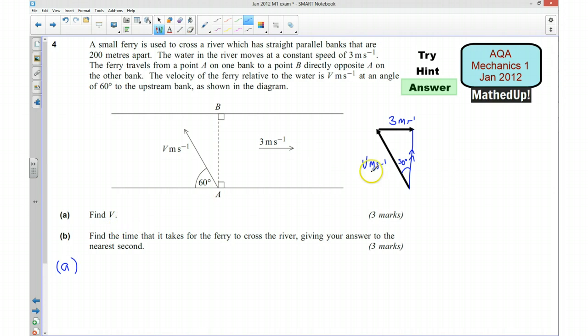Okay, so in order to find V, I know that the sine of 30 is going to be equal to my opposite divided by my hypotenuse, so 3 over V. So I can start by saying that sine of 30 degrees is going to be equal to 3 over V, which means V is going to be equal to 3 over sine of 30. If I put that into, well, we should know that sine of 30 is 0.5, so 3 over 0.5 is going to give me 6 metres per second.